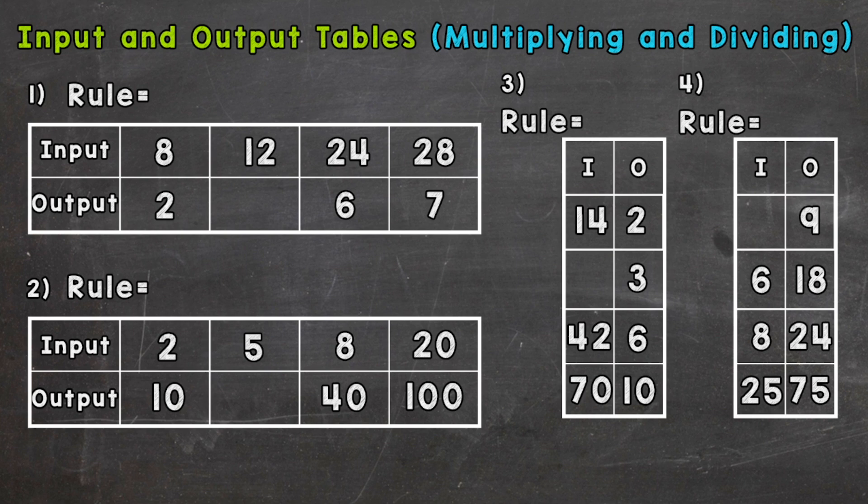Let's jump right into number one here, where we start with an input of eight and an output of two. Something is done to that eight and a two is our output. So how do we get eight to equal two, 24 to equal six, and 28 to equal seven? We are decreasing in value, so it's going to be either subtraction or division. But this video is only multiplying and dividing, so we know it's going to be division.